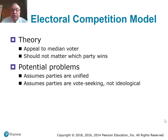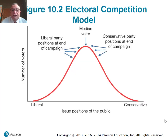The second model is the electoral competition model, where parties simply try to say whatever is possible to get a candidate elected. This appeals more to the median voter. It assumes the parties are unified and seeking votes to get elected, not necessarily to carry out an ideology. As you can see by this curve, both liberals and conservatives, once they get nominated, rush to the middle to get that median voter. In power, they'll do what they think needs to get done, based upon public opinion and where people are.